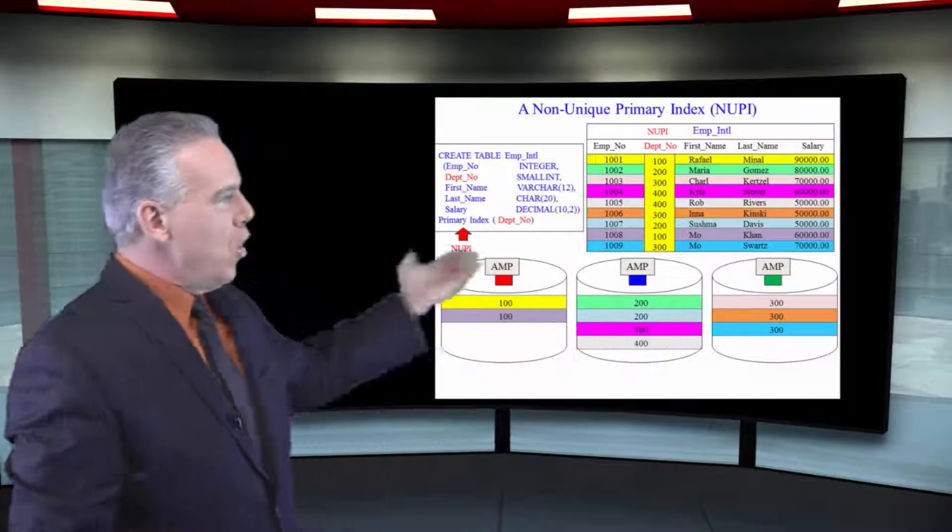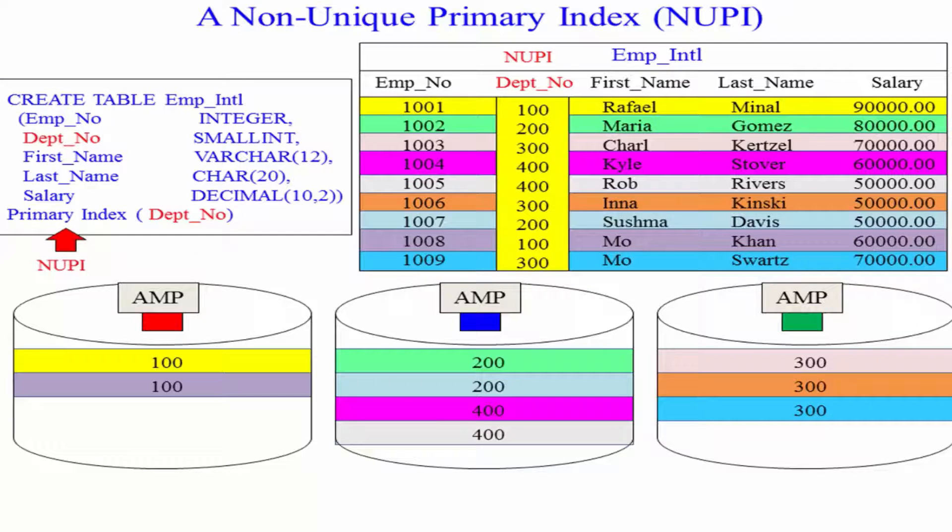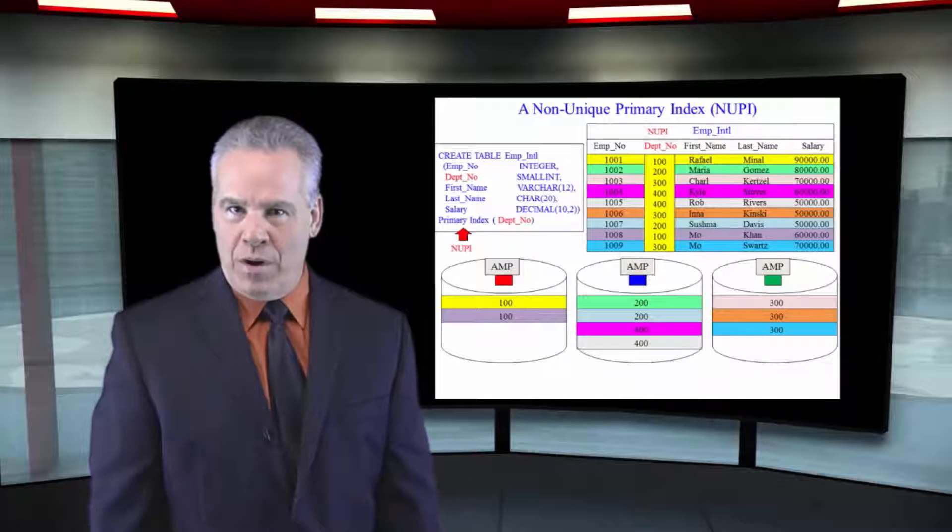As you can see here, we have created a non-unique primary index. It doesn't ever say non-unique, it just says primary index DEPNO, and that means it's a non-unique primary index.